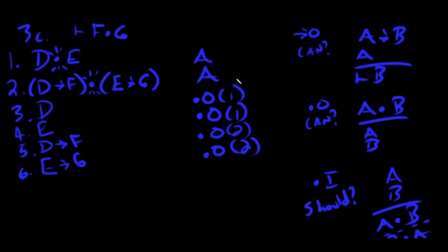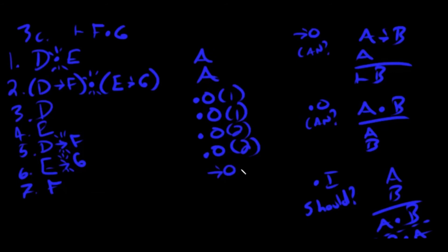Go back to the top: can I do arrow-out now? Yes — I have two arrows not in parentheses. Do I have a left-side match for 'd arrow f'? Yes — 'd' is at line three. So I unlock 'f'. Line seven: 'f' — arrow-out. The arrow was in line five; its left-side match was in line three. Now for 'e arrow g': its left side is 'e', matched at line four, so I unlock 'g'. Arrow-out — arrow from line six, left-side match from line four.